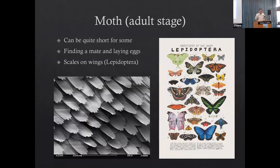Now the adult stage. The adult of our moths, much like butterflies, have wings - with some exceptions. The adult stage can be quite short for many of our moths. They got all of their energy from the larval stage, from the caterpillar stage, so the adult stage may be just a few days. The scales on the wings of moths are somewhat unique - they can come off. If a moth flies into a spider web, it can lose some of those scales and fly right off.